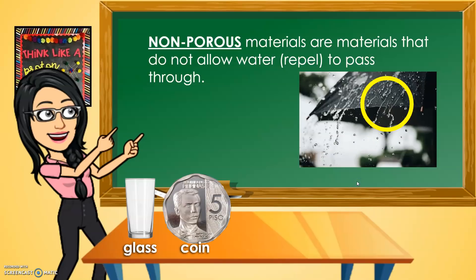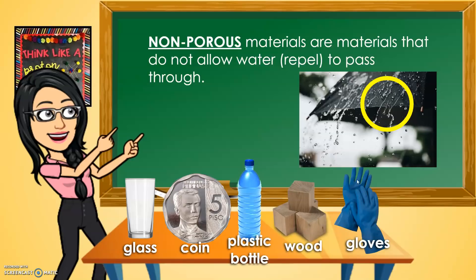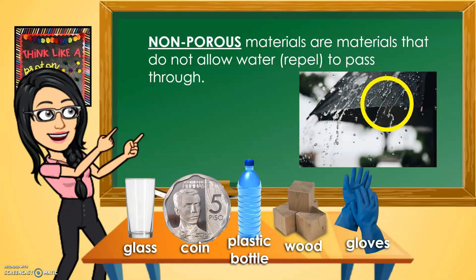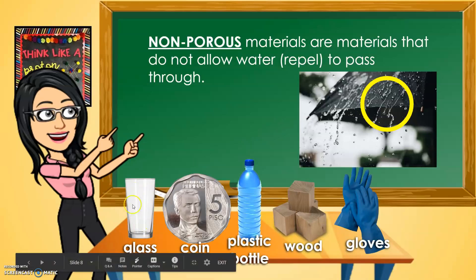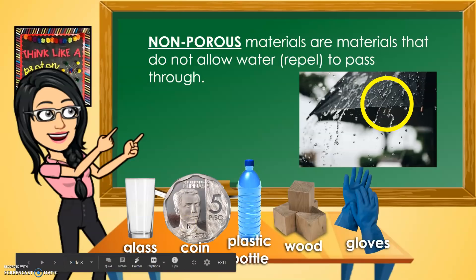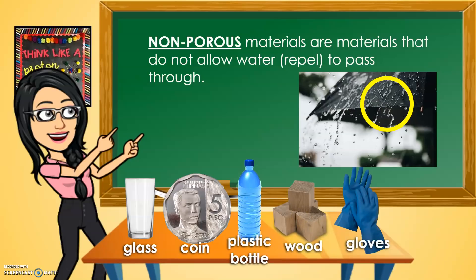Other examples of non-porous materials are glass, coin, plastic bottle, wood, and gloves. Glass is made from minerals and does not absorb water. Coins are made from metal — metals do not absorb water. Plastic bottles and gloves are made from plastic or rubber, so they do not absorb water. Wood also does not absorb water, except for the roots of plants.